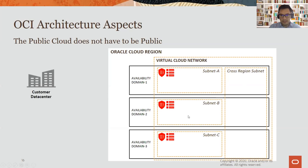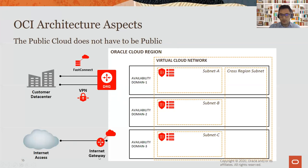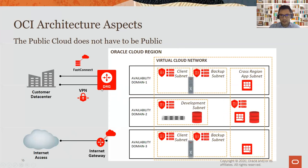To connect to this VCN, customers can use VPN or Fast Connect — going into a Dynamic Routing Gateway (DRG) at the VCN level — or internet access through an internet gateway. Inside the VCN you can have as many subnets as needed, containing instances such as Exadata Cloud Service, compute instances, or databases.